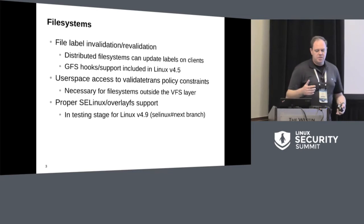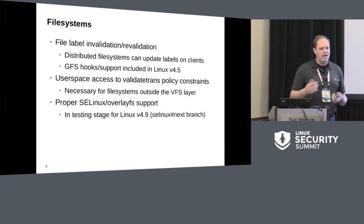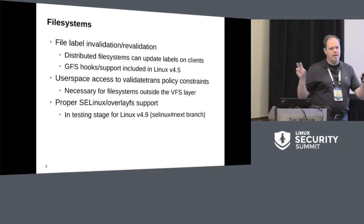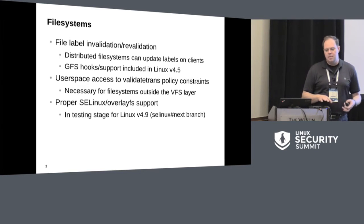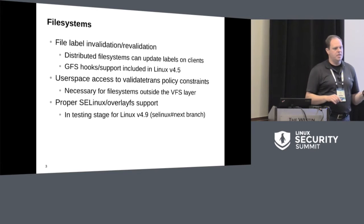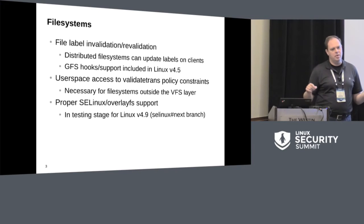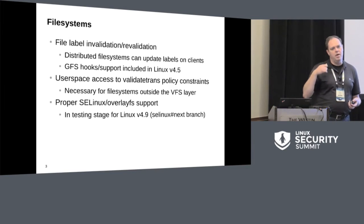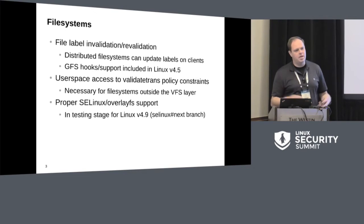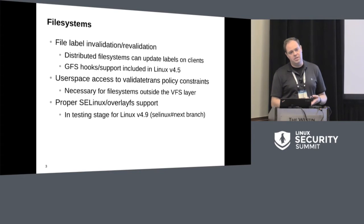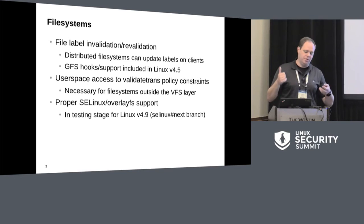Another big area this year for us has been file systems. We've introduced file label revalidation. This is a big deal for distributed file systems where you've got multiple clients all working on the same files and file systems. This allows one client to make an update that invalidates the SELinux label on all the other clients. The next time you actually make an access on that inode, we'll revalidate that SELinux label and generate the correct label from the policy. You'll never even notice it. The first implementation is GFS, and that support has been in since 4.5.